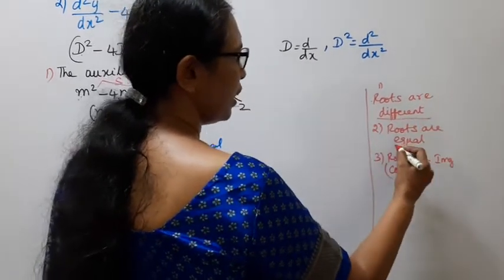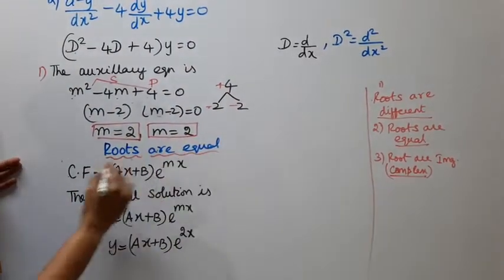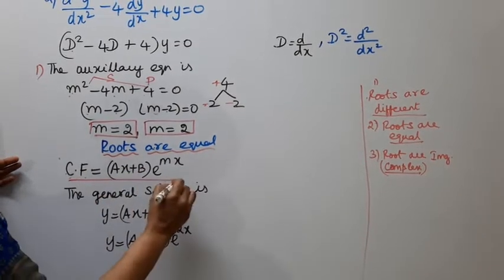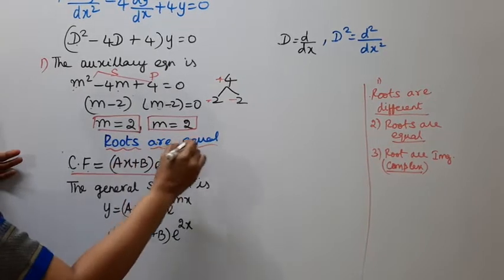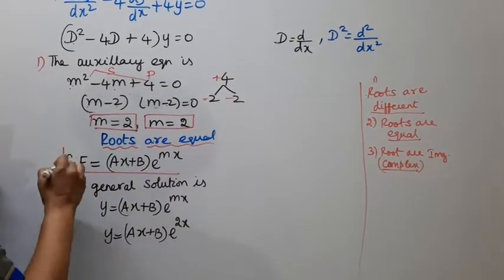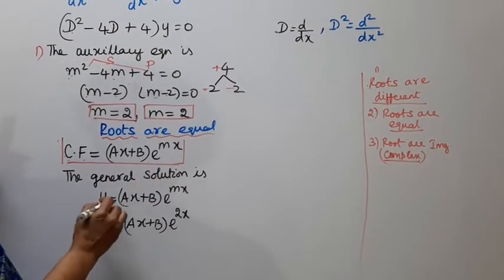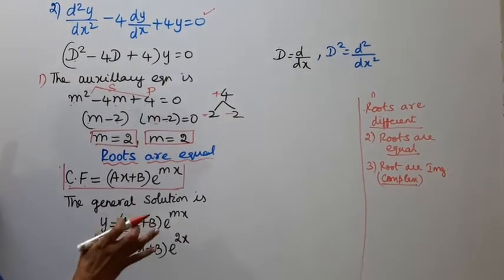For different, equal, and complex roots, the complementary function formulas differ. For equal roots, the complementary function is (Ax + B)e^(mx). The general solution is y equal to the complementary function.